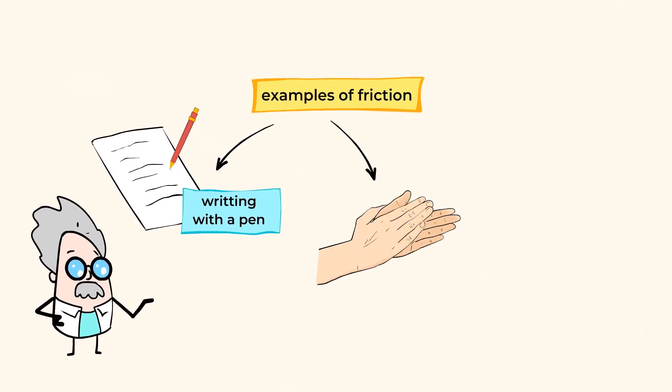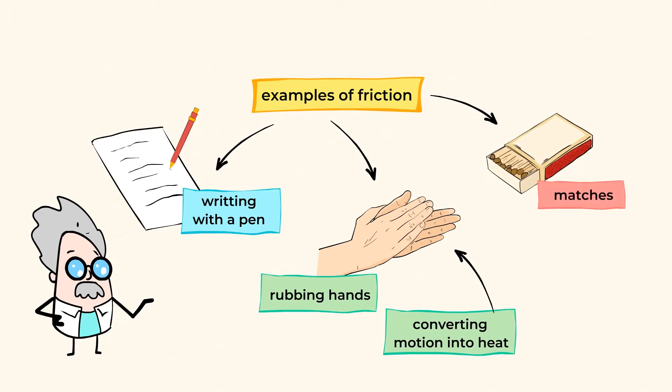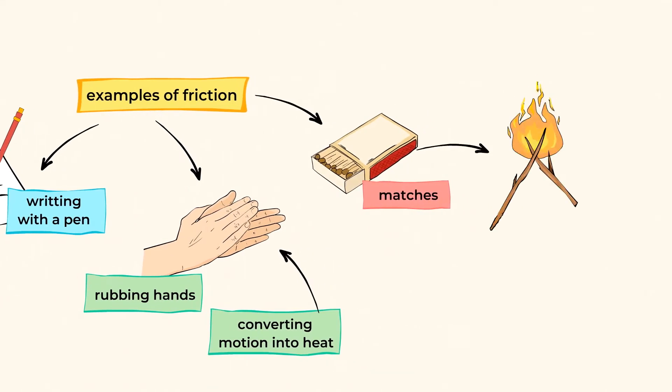Have you ever rubbed your hands together to keep warm? The friction between your skin causes some of the energy of motion to be converted into heat. Before matches were invented, people used to rub two sticks together to start a fire.